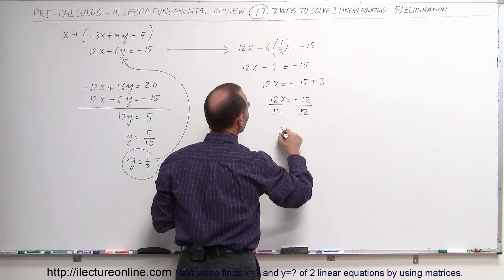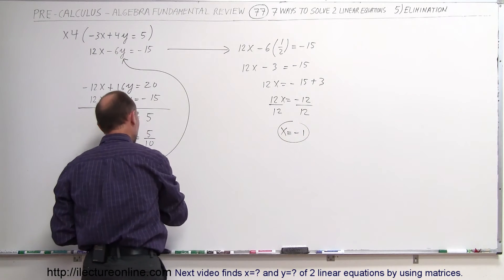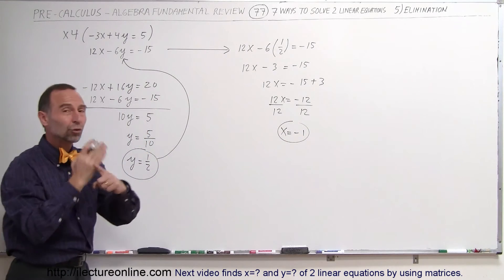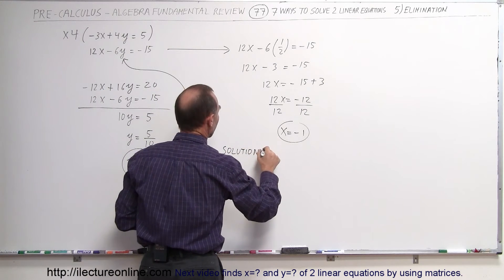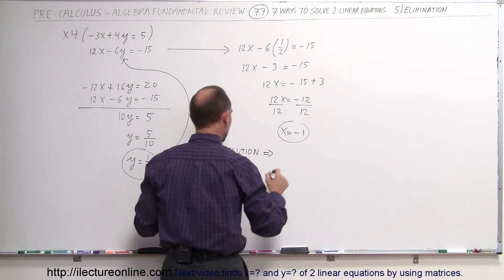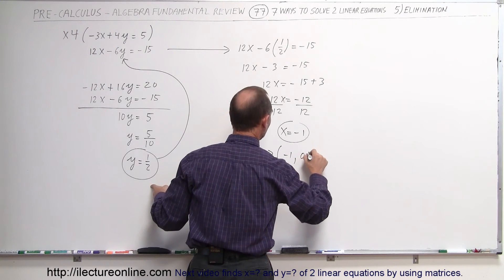Now I divide both sides of the equation by the coefficient of x, 12 and 12. So I get x equals minus 1. So when x equals minus 1 and y equals 1 half, that's the place where the two lines cross. So the solution is equal to minus 1 and 0.5.